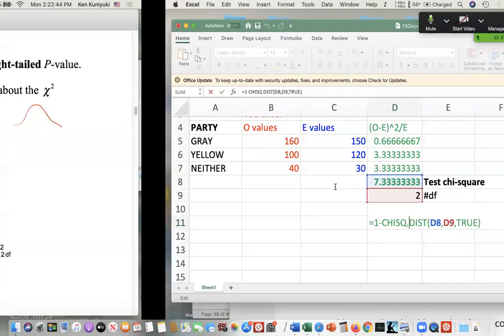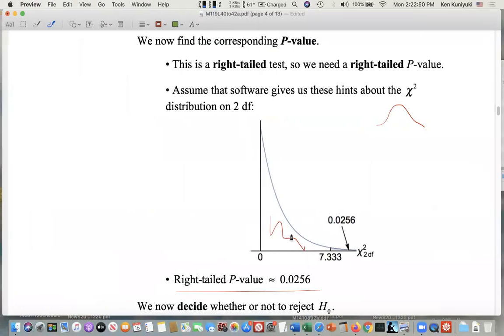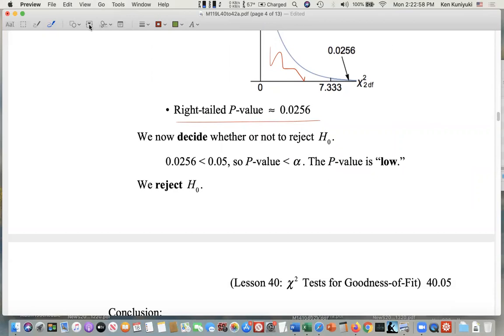Now, here's where alpha comes in. Is the p-value low? Is it lower than alpha? Here's our p-value, the 0.0256. Here's alpha, 0.05. So about 2.6 percent versus 5 percent. Is the p-value low, lower than alpha? Yes, it is. The p-value is lower than alpha. The p-value is low. Therefore, the null must go away. We reject the null.